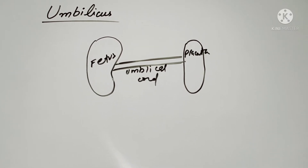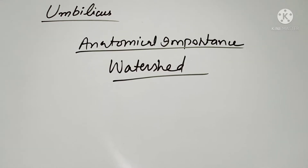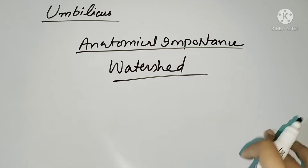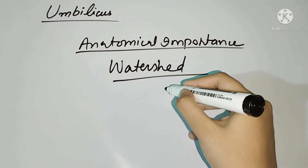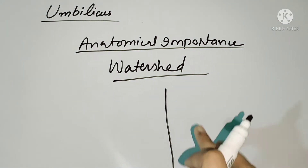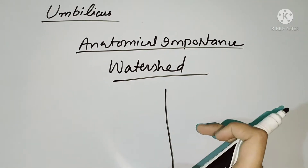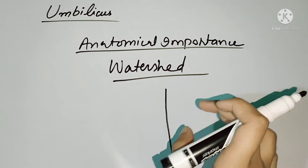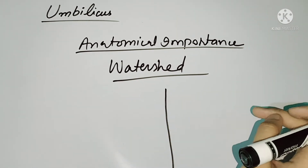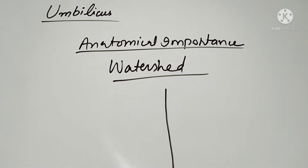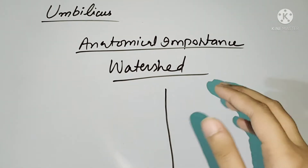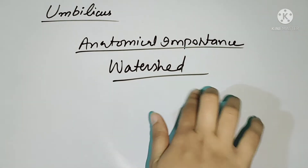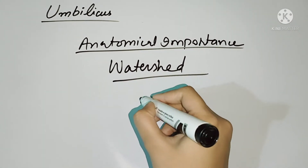Now we will study the anatomical importance of the umbilicus. There is an important concept called the watershed. A watershed is like a barrier between two rivers flowing in different directions — the barrier divides the flowing liquids. The umbilicus acts as a watershed in the abdominal wall.